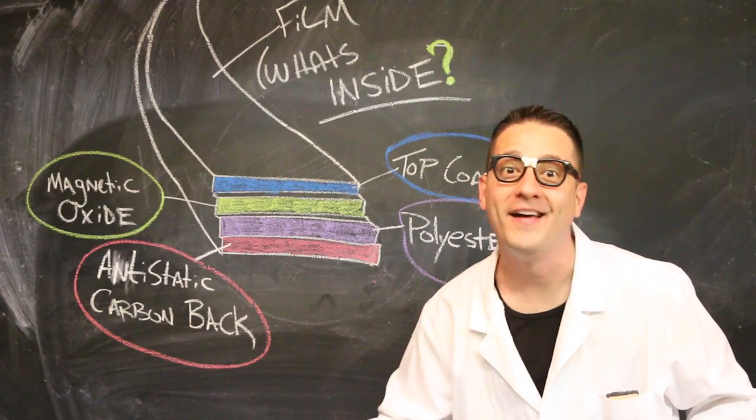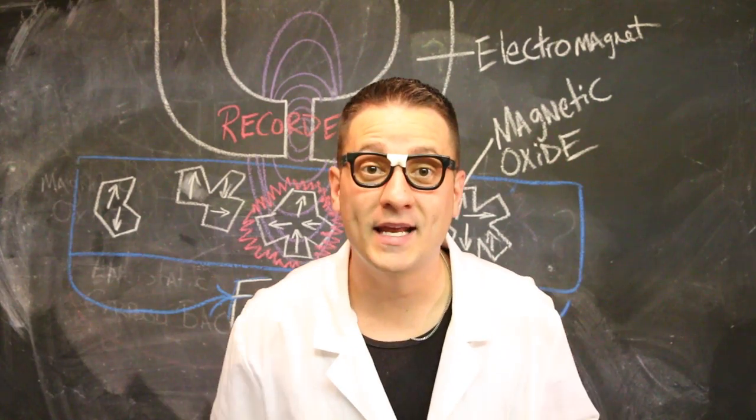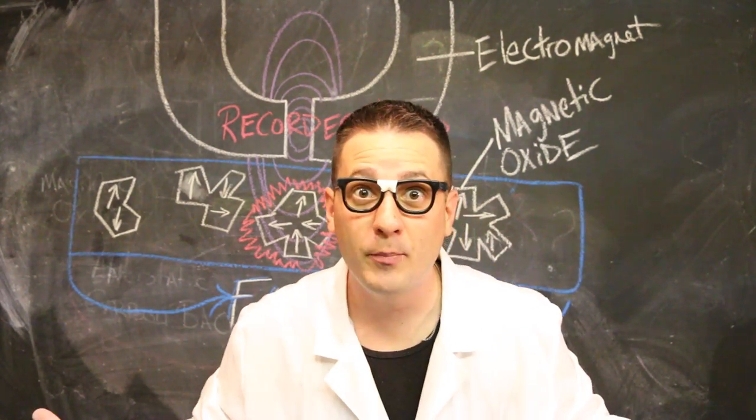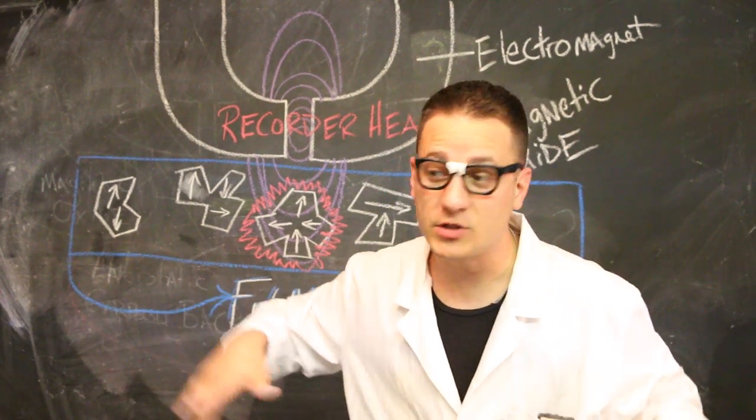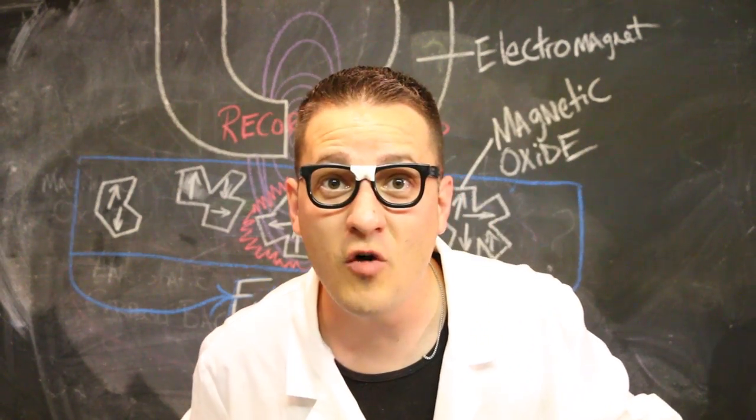Now, how does all this work? Let's check it out. The film is made up of magnetic oxide, so if we introduce a magnet, we can tell the magnetic oxide which way to point. A recorder head is an electromagnet, and it introduces directional waves to the magnetic oxide in the film. It's a movie.